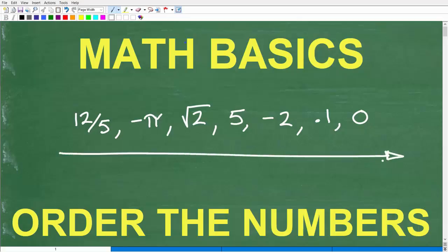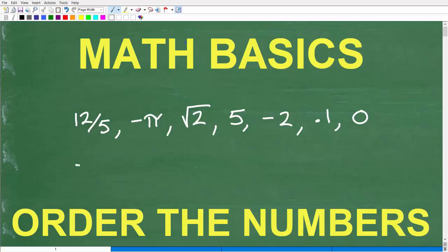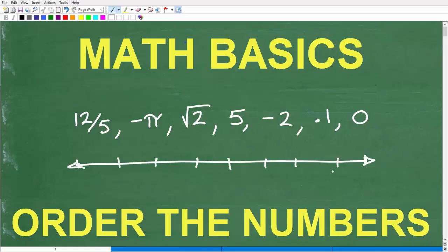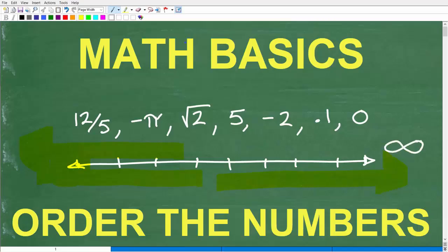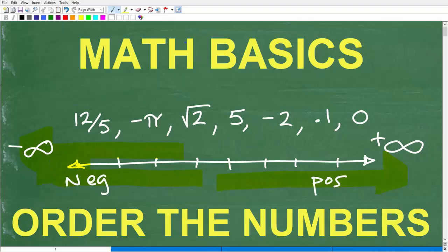The way you want to do this is just draw yourself a number line — just something like this — and start putting these numbers in order. Here's a clue: numbers decrease to the left, getting lower and lower in that direction, and get greater and greater to the right. If you want to get technical, over here is positive infinity — the largest number you can ever get to — and over here is negative infinity. Negative numbers are on the left, positive numbers on the right, and zero is in the middle.